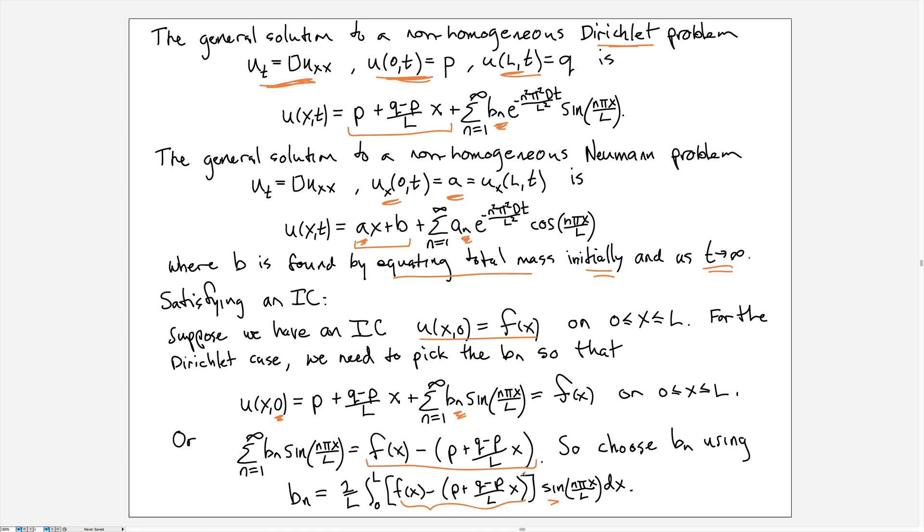The Neumann case is very similar, except we would have cosines with an a_n in front here, but the principle is exactly the same. The formula would just be the a_n formula with this function as the function whose Fourier cosine series we're trying to calculate.